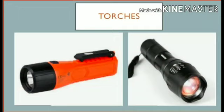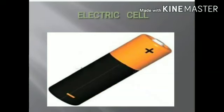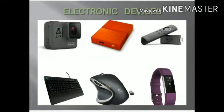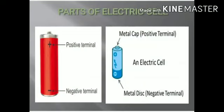A torch has a bulb that lights up when it is switched on. Where does the torch get electricity from? Electricity to the bulb in a torch is provided by the electric cell. Students, let us recall about electric cells. Electric cells are also used in many other devices, like alarm clocks, wrist watches, cameras, etc. Have you ever carefully looked at an electric cell?